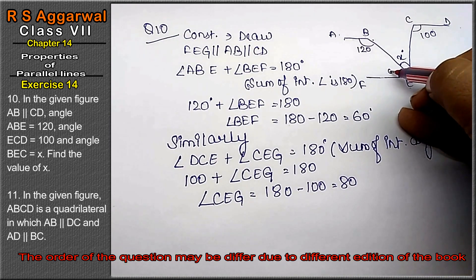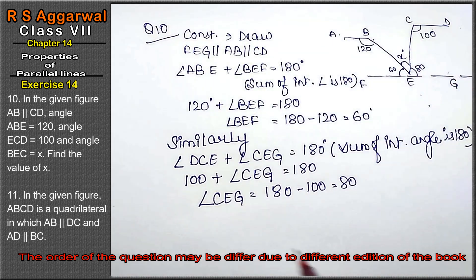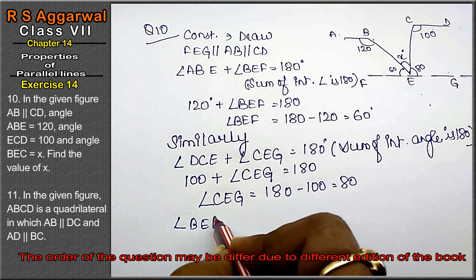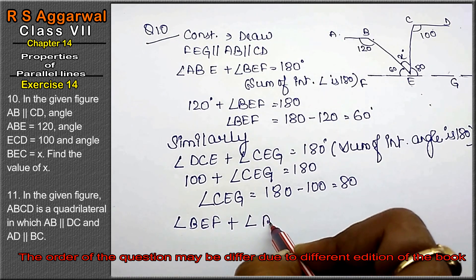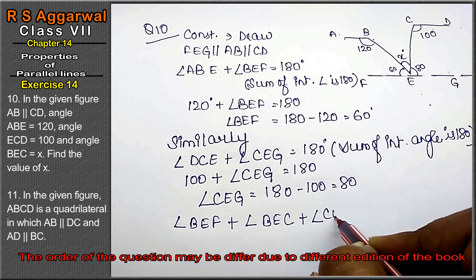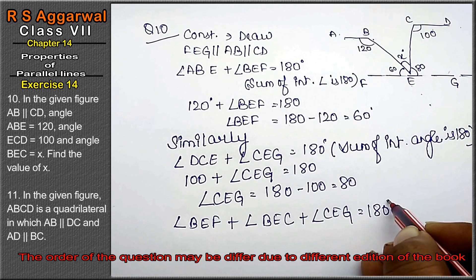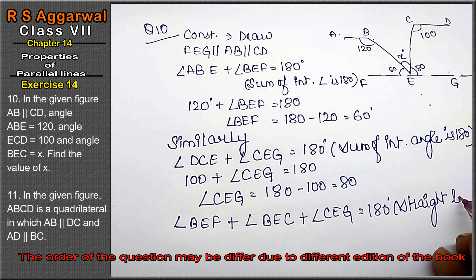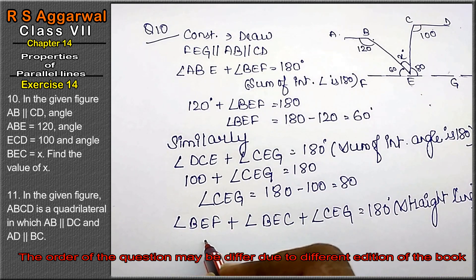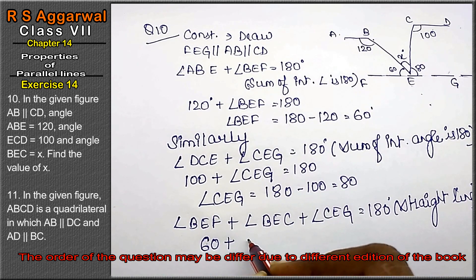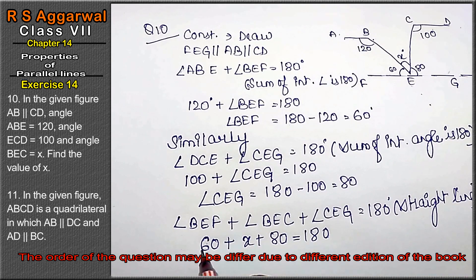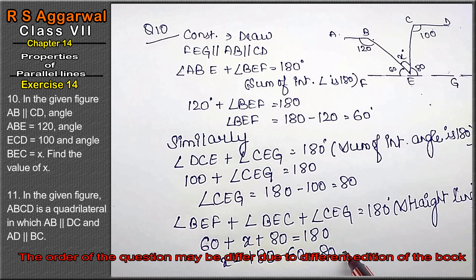So we got angle BEF as 60 degrees and angle CEG as 80 degrees. Now by the straight line theorem: angle BEF plus angle BEC plus angle CEG equals to 180 degrees. So 60 plus x plus 80 equals to 180. Therefore x equals to 180 minus 60 minus 80, that is 40 degrees.